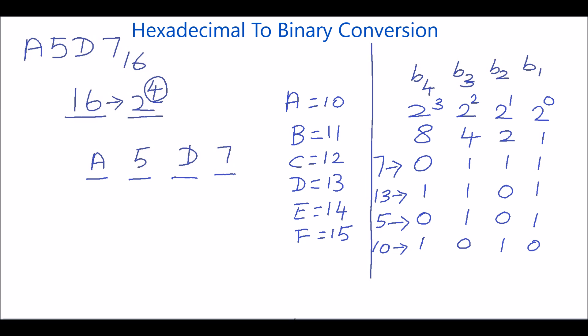Now, we will write the binary number of each hexadecimal digit. 7 is 0111. D is 1101. The next digit 5 is 0101.